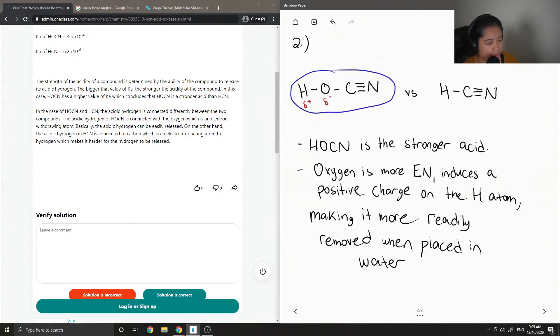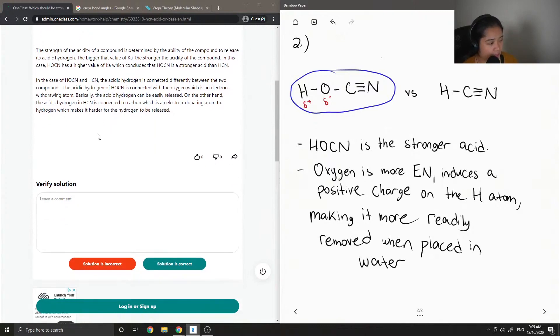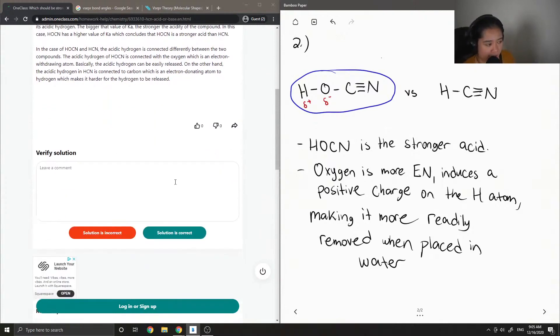On the other hand, the acidic hydrogen in HCN is connected to carbon, which is an electron donating atom to hydrogen, which makes it harder for the hydrogen to be released.